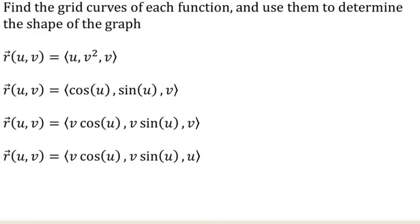Here we want to find the grid curves for each of these parametric surfaces, and then use the grid curves to help us determine the shape of the graph. The grid curves are like traces — they're what we get when we set one of our variables equal to a constant.